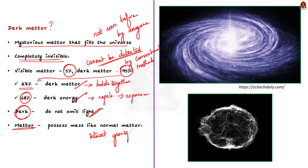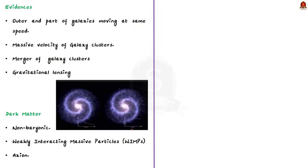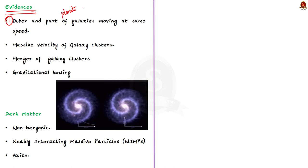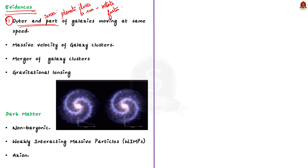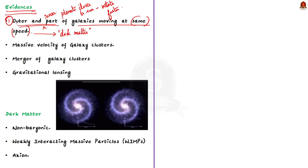No one has ever seen dark matter, but physicists strongly believe it exists because of substantial evidence. The first evidence concerns galaxy rotation. Planets closer to the sun rotate faster than outer planets. Applying the same logic to galaxies, paths near the center should rotate faster than those away from it. However, measurements have conclusively proved that outer and inner parts of galaxies move at nearly the same speed. The most logical explanation is that galaxies have huge amounts of dark matter providing additional gravitational pull to ensure visible matter throughout the galaxy rotates at the same rate.